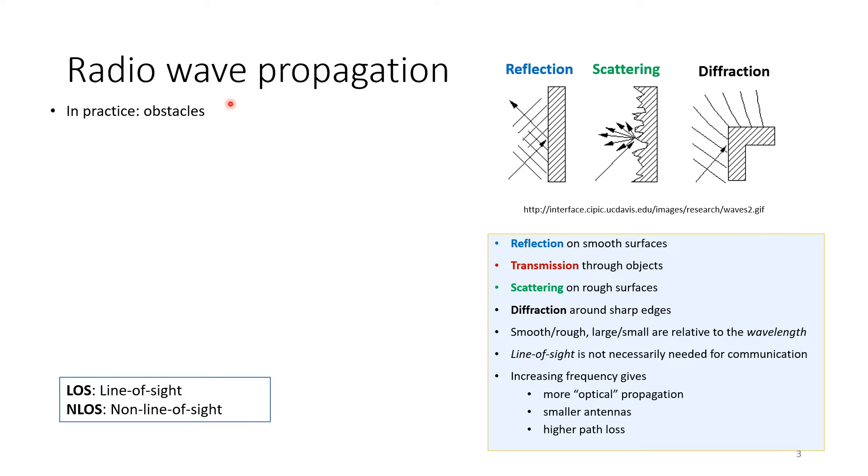Radio wave propagation: we can think of the three main types of propagations or phenomena that occur during propagation: reflection, scattering, and diffraction. If you look at the following object, we get reflection where the signal gets reflected, or we can get transmission where part of the signal will be transmitted through. If your surface is rough, then we get scattering where the signal will be scattered around, or we get diffraction at the sharp edges where the signal will get diffracted and kind of change direction.